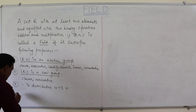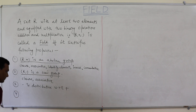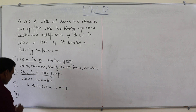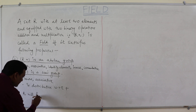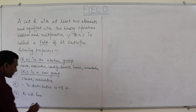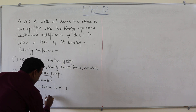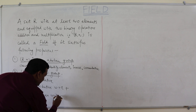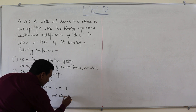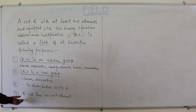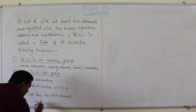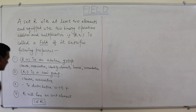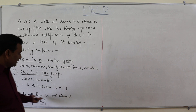Fourth property: R will have a unit element — that is, this will be a ring with unity. So 1 belongs to R. This fourth property says the ring has a multiplicative identity.